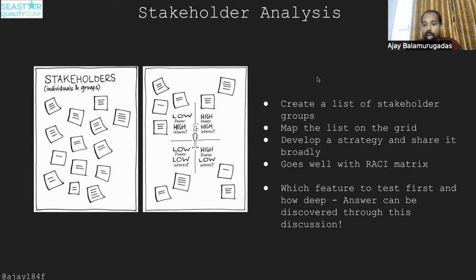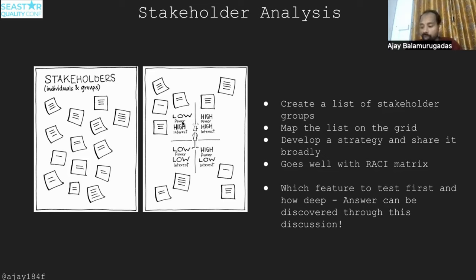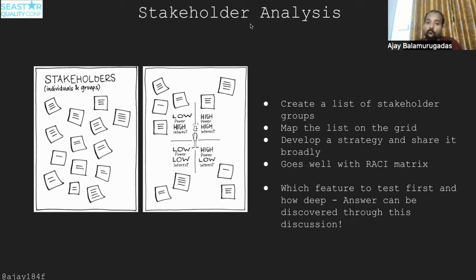Once you categorize stakeholders on the grid, develop a strategy for each quadrant and share it broadly. This works well with the RACI matrix — responsible, accountable, consulted, and informed. Applying stakeholder analysis to testing helps you decide which feature to test first. A feature important to a high-power, high-interest group gets higher priority. This discussion also reveals how deep to test each feature, so answers around prioritization and depth can be discovered through this technique.